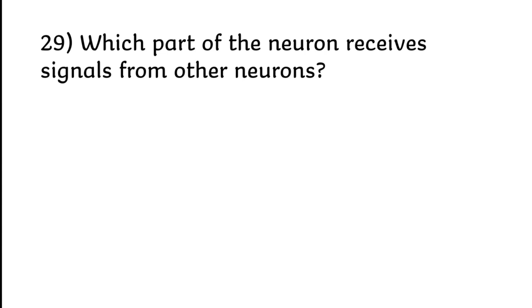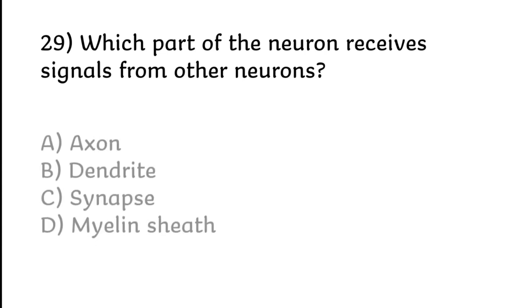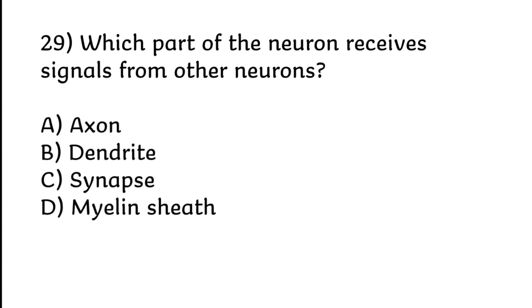Which part of the neuron receives signal from other neurons? Axon, dendrite, synapse, or myelin sheath. Correct answer is option B, dendrite.